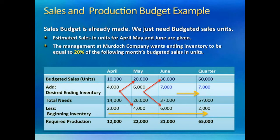The desired ending inventory of 7,000 in the June column comes from 20% of July's expected sales of 35,000. Once we know how much we need for sales and inventory, we also need to account for beginning inventory already on hand. Beginning inventory of any month must be 20% of that month's sales needs. So ending inventory of March 31st becomes the beginning inventory of April 1st, ending inventory of April becomes beginning inventory of May, and so on. The red arrows going down from 4,000 to 4,000 and 6,000 to 6,000 show ending inventory of the previous month copied down as beginning inventory of the next month.